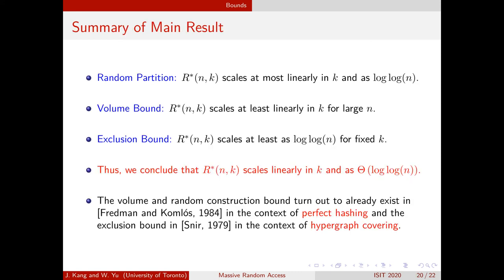To recap, we've presented three bounds. The random partitioning achievability bound shows the minimum feedback rate is at most linear in k with a log log n scaling term. The volume bound shows the minimum feedback rate is at least linear in k for large n. The exclusion bound shows the feedback rate is at least order log log n for fixed k. We conclude that the minimum feedback rate scales linearly in k and as Theta(log log n) in our regime of interest. These bounds, while new in this context, are known in other problems — the volume and random construction bounds appear in work by Fredman and Komlós on perfect hashing, and the exclusion bound in early work by Snir on a hypergraph covering problem.